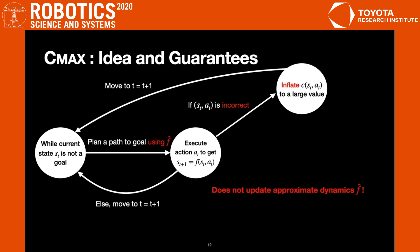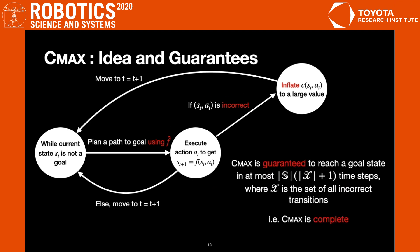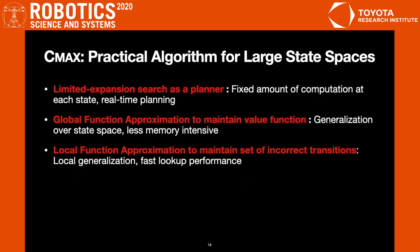CMAX only tries to reach the goal while avoiding regions where the approximate model is inaccurate. We can provably show that CMAX is guaranteed to reach a goal state, and it takes a number of steps that is proportional to the number of states and number of incorrect transitions in the worst case. In other words, CMAX is complete.